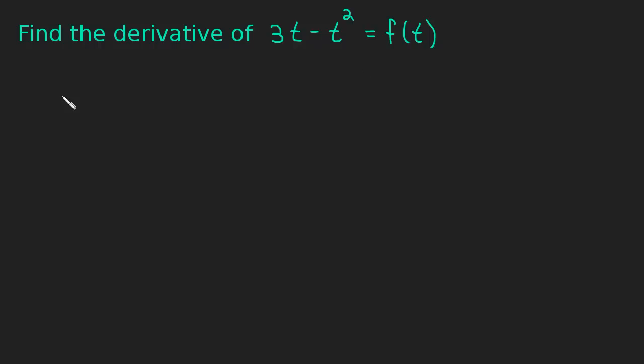Okay, so to find this derivative, we're going to go back to the definition. The limit as h approaches 0 of f of t plus h minus f of t, all divided by h. And then we're just going to do what we've been doing and plug this in for every t we see. Okay, so let's go ahead and do that.